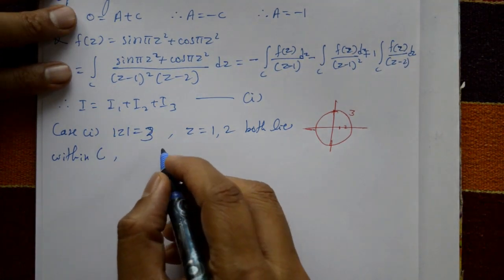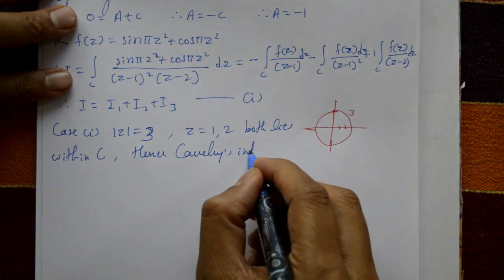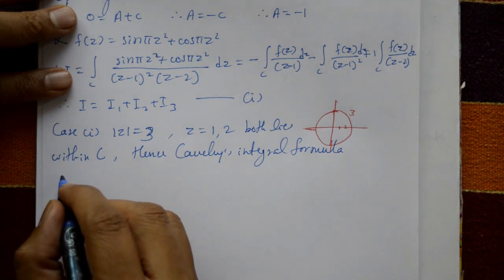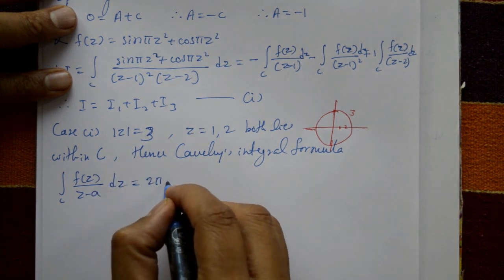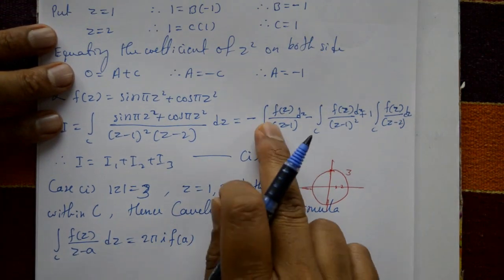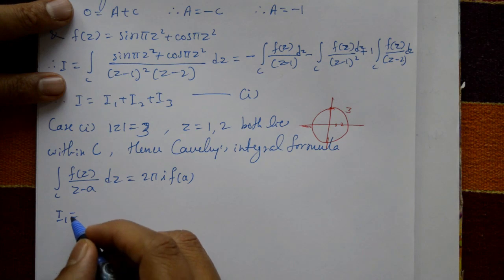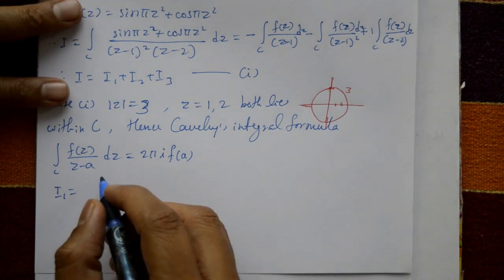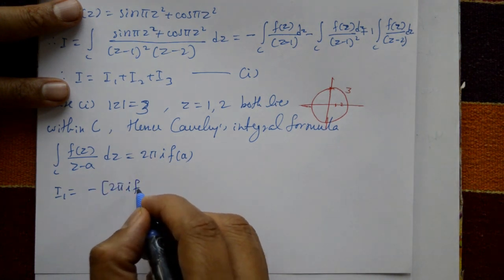Hence, applying Cauchy's integral formula: ∮_C f(z)/(z-a) dz = 2πi f(a). Using this formula for I1, and noting the minus sign, I1 = -2πi f(1).